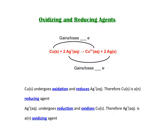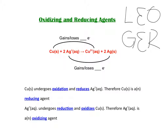In our example, copper goes from a zero charge to a 2+ charge, meaning it lost two electrons — it undergoes oxidation. Silver went from 1+ to neutral, so it gained electrons. Therefore, copper is the reducing agent because it causes silver to be reduced. Silver undergoes reduction and oxidizes copper, making silver the oxidizing agent.